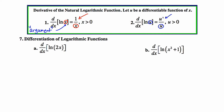Let's take a look at some specific examples. In 7a, find the derivative of the natural log of 2x. Our argument is 2x, and that's going to end up in the denominator. The derivative of 2x is just 2, so the 2 goes in the numerator. The 2 and the 2 cancel out, leaving a 1 in the numerator, so our overall answer is 1 over x.